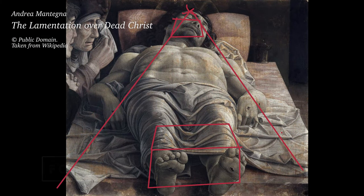Foreshortening consists of shrinking the size of distant objects and making near objects larger. This will make the perspective more pronounced. For example, when we watch a human figure from the bottom, the feet will look much larger than the head compared to when we watch from a frontal view. You can use one, two, or three-point perspective to add foreshortening. However, if you use a very near object perspective or want to add a more dramatic effect, use three points.